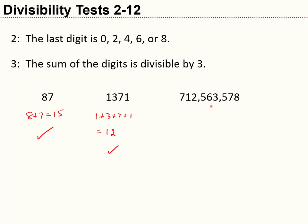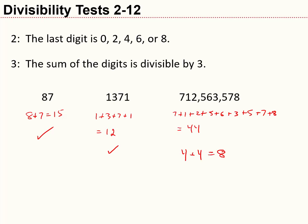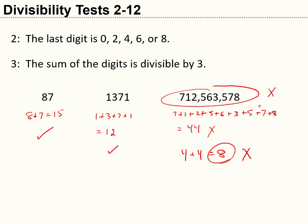Here's something a little more challenging. Adding all the digits of 712,563,578, we get 44. But perhaps you're not sure if 44 is divisible by 3. You can just do the same trick again on 44: 4 plus 4 equals 8. Since 8 is not divisible by 3, then 44 is not divisible by 3, and so 712,563,578 is not divisible by 3.